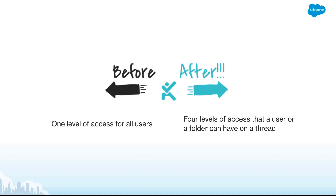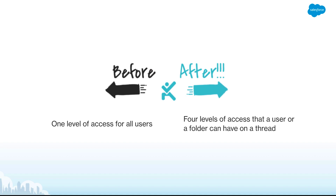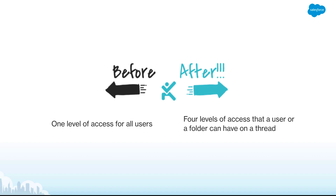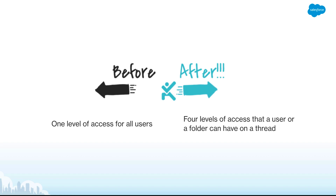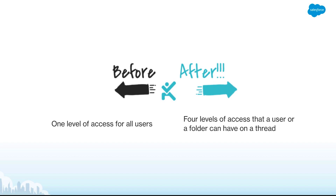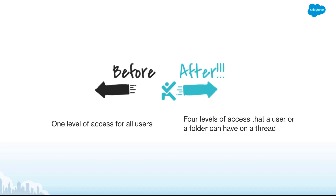Up until now, Quip's folder sharing model has only supported one access level for all of its users. All users shared on a thread — like a Quip document, spreadsheet, presentation, or chat — have the same permissions. They can read, edit, modify sharing, and delete the document. Link sharing introduced a more complex set of permissions, but they're only implemented for access via the link and not for specific users, folders, or groups shared directly in product.